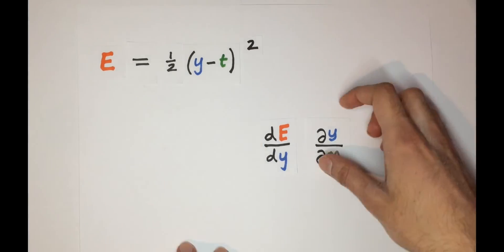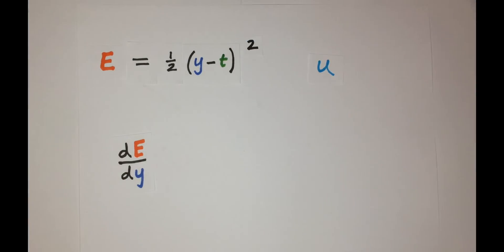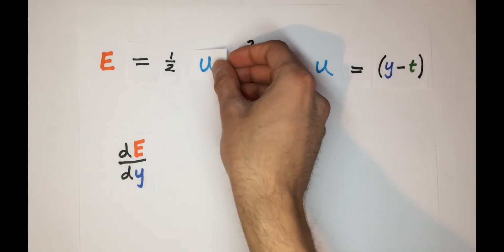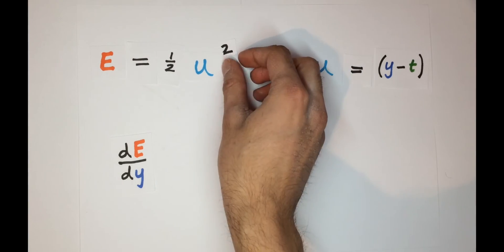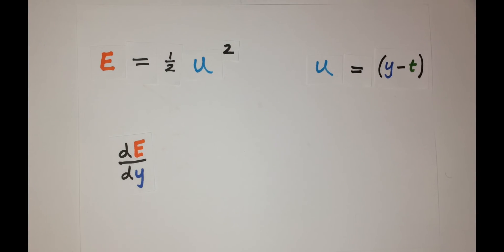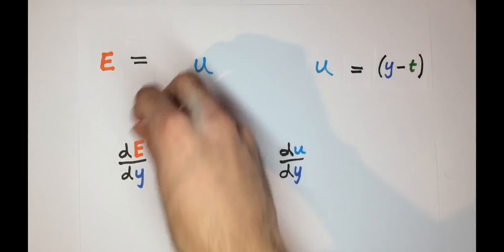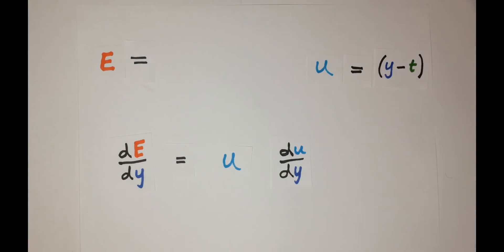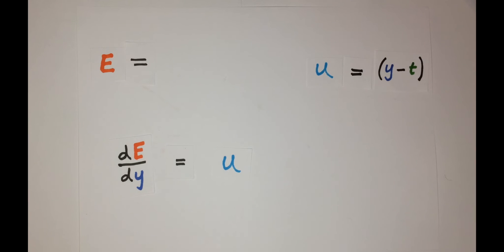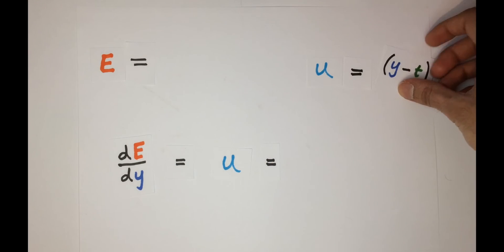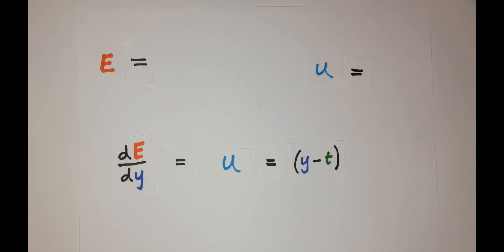So let's start with de on dy. So we'll first introduce a helper function u which equals y minus t. And that makes e equal half times u squared. So from the chain rule again, we have de on dy equals de on du times du on dy. So for de on du, multiplying by the two cancels out the half, which leaves us with just u, and du on dy is just 1. So that leaves us with de on dy is equal to just y minus t.